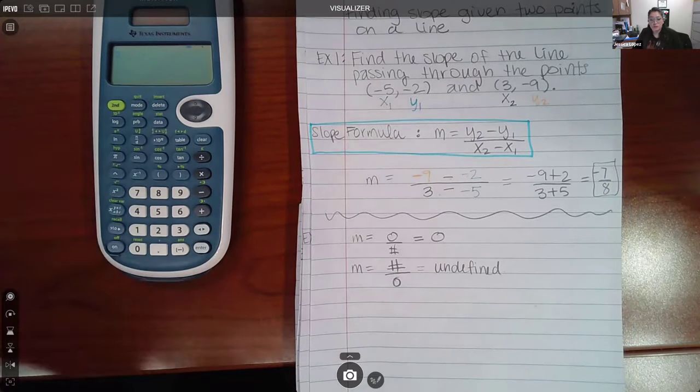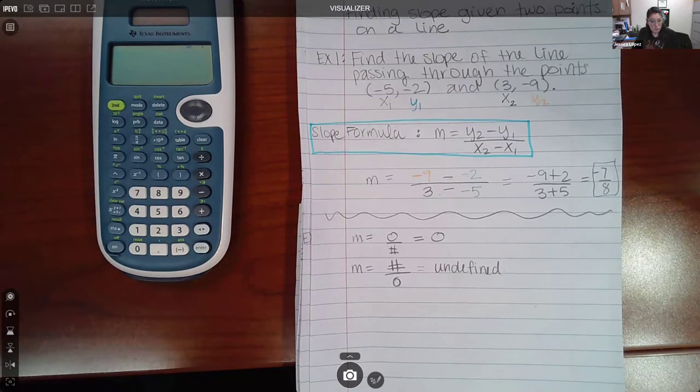Or you may calculate that your slope is zero. That's only going to happen when you get zero in the numerator.